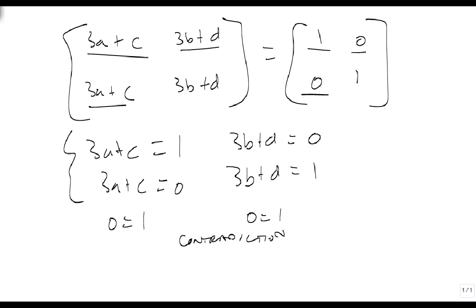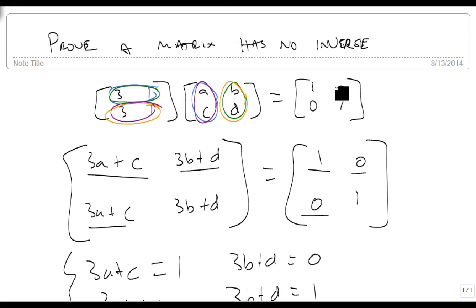So there's no values of A and C for which 3A plus C is 1 and 3A plus C is 0. And there's no values of B and D so that 3B plus D is 0 and 3B plus D is 1, thus showing that this has no inverse.